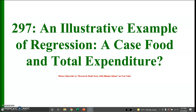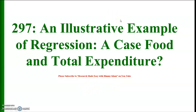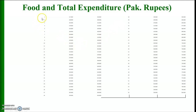We will discuss an illustrative example of regression in which food expenditure is expressed on total expenditure. This is cross-sectional data from observation number 1 up to observation number 55. There are two columns: one shows expenditure on food items in Pakistani rupees and the other shows total expenditure in Pakistani rupees.